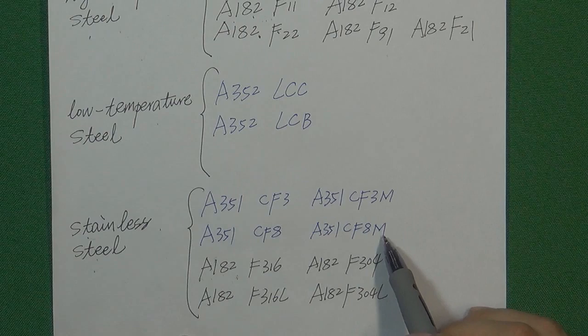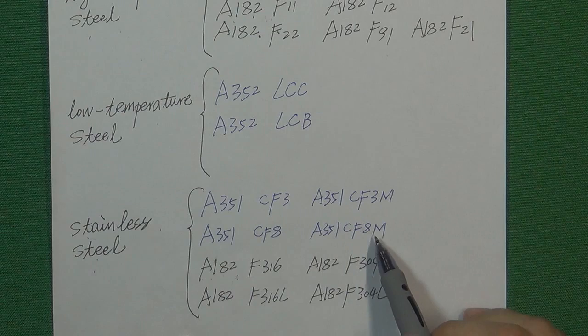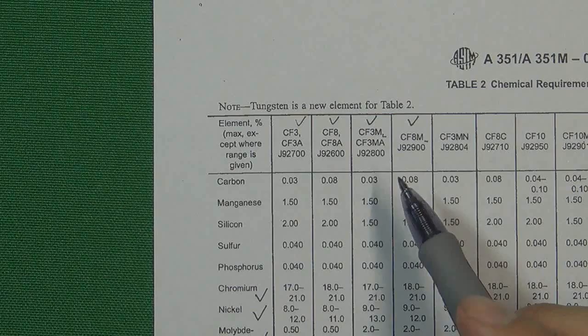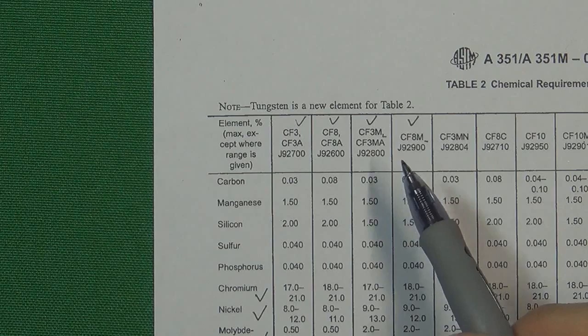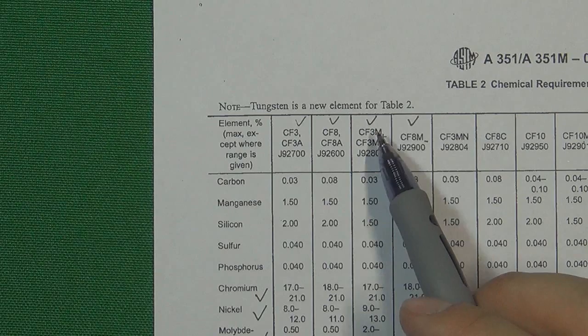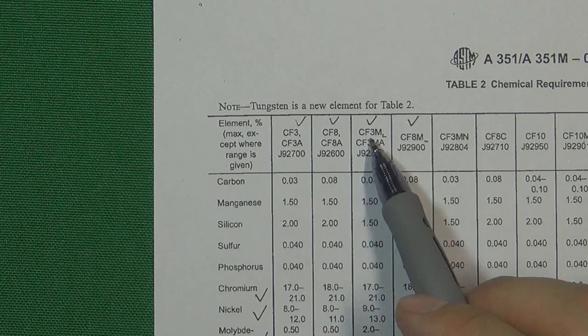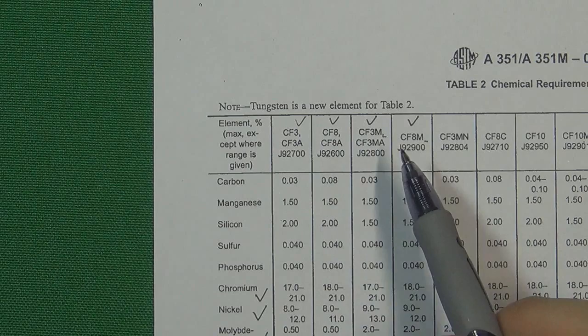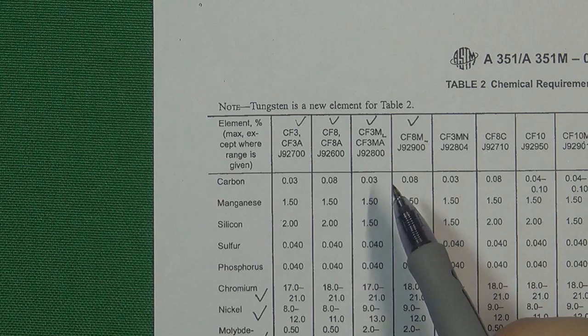Let's find the answer. When comparing two kinds of stainless steel material, we need to consider two things: corrosion resistance ability and mechanical strength. For corrosion resistance, if the material contains molybdenum it will be better than one without — so CF3M is better than CF3, and CF8M is better than CF8. But we also need to compare materials by mechanical strength, because mechanical strength is very important. We are using this material to make valves that hold pressure, so we need to make the valve safe.